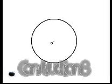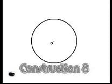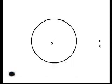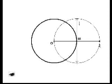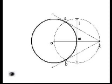Construction number eight: constructing tangents to a given circle from a point in the exterior of the circle. Given point Q in the exterior of circle O, using a straight edge, draw line OQ. Construct a perpendicular bisector of line OQ. Label the perpendicular bisector line L and the midpoint M. With M as center and line MQ as radius, construct circle M intersecting circle O in two points. Label these points A and B. Using a straight edge, draw line QA and line QB. Line QA and line QB are tangent to the circle from point Q.